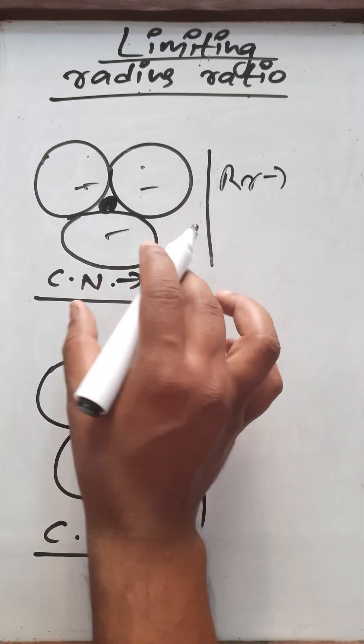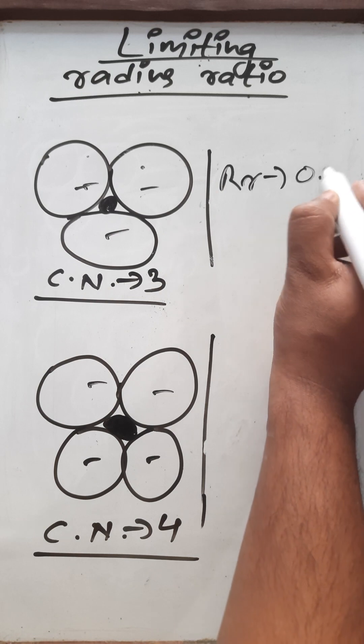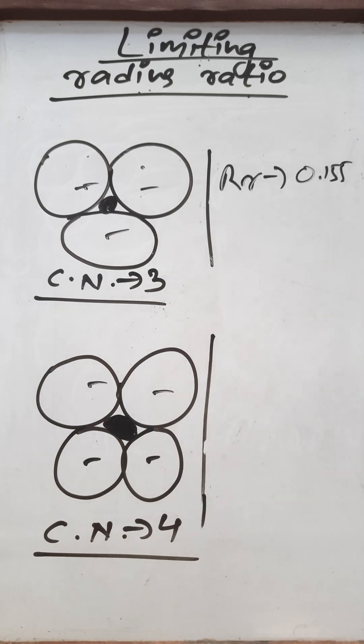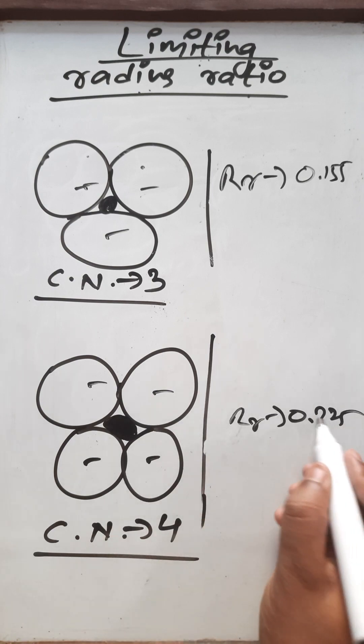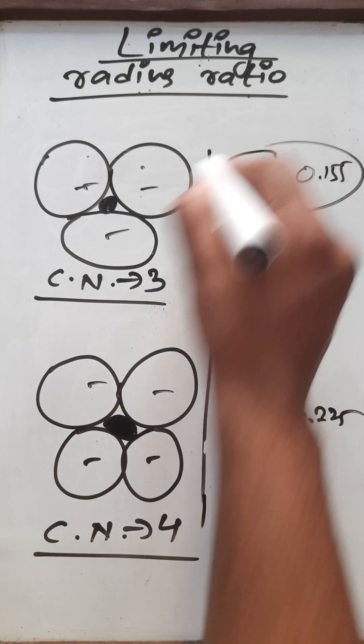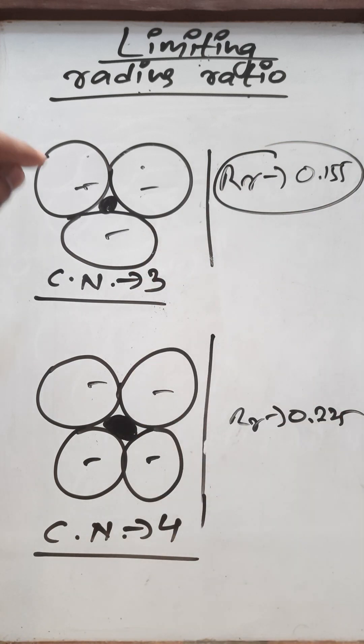...that for coordination number three, the minimum radius ratio value is 0.155. Similarly, for coordination number four, the minimum radius ratio value is 0.225. This value—the minimum radius ratio value for an ionic compound to have a particular coordination number—is called the limiting radius ratio value.